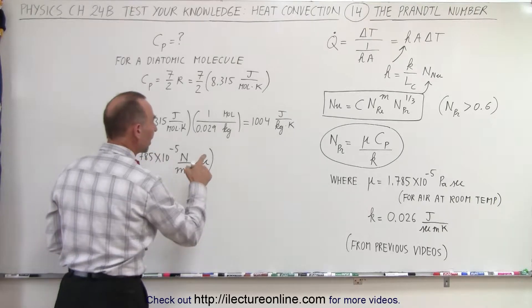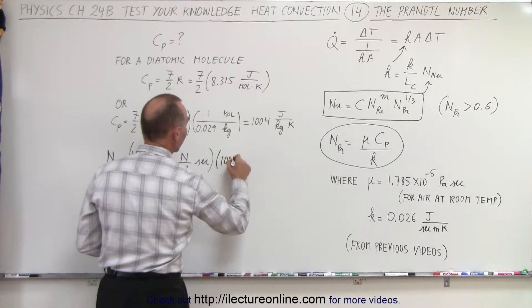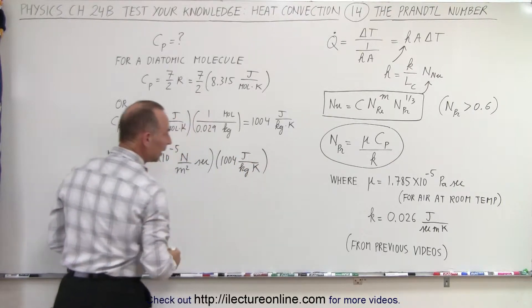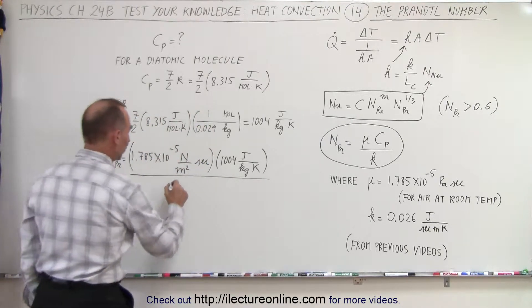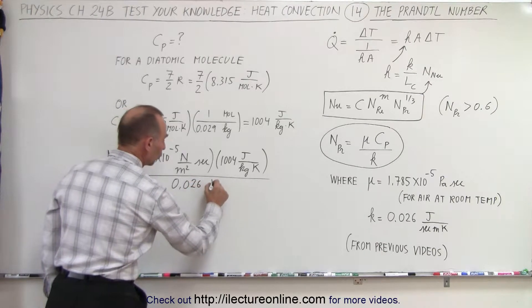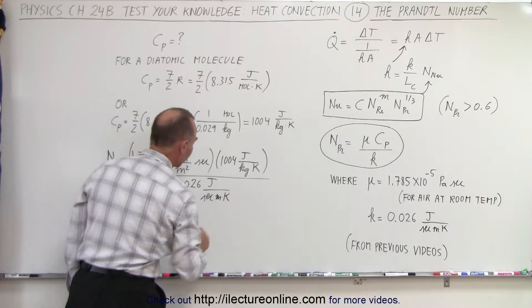We're going to multiply that times the specific heat which is 1004 joules per kilogram times Kelvin. And then we divide that by K which is 0.026 joules per second which is watts per meter times Kelvin.